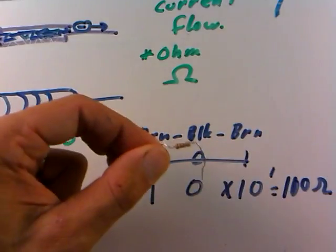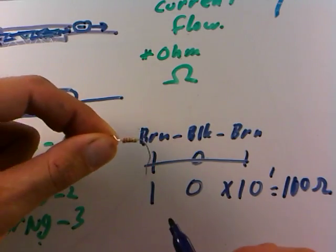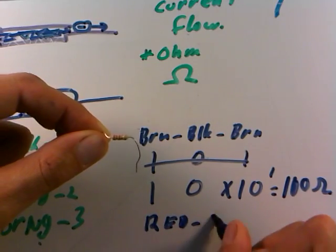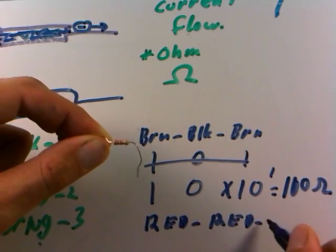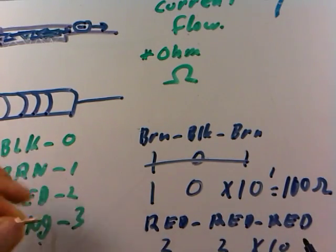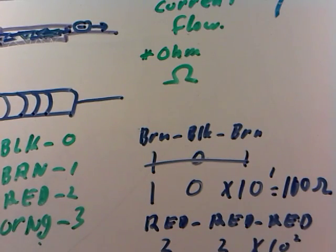How about the next one right here? Just do one or two more here. This is red, red, red. So I see a red, and I see a red, and I see a red, three reds in a row. Well, one red is two, the next red is two, and remember, times ten to the color of the third band, which is another red, so this times ten to the two.